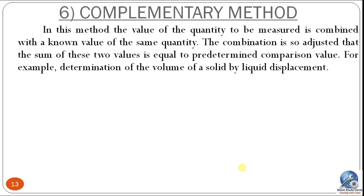Finally, the complementary method of measurement. In this method, the value of the quantity to be measured is combined with a known value of the same quantity, and the combination is adjusted so that the sum of these two values equals a predetermined comparison value.